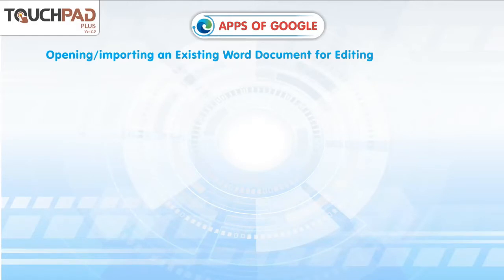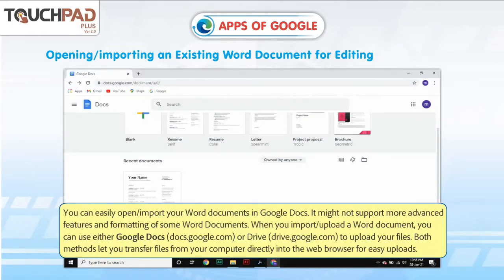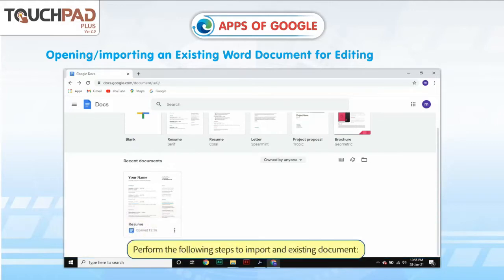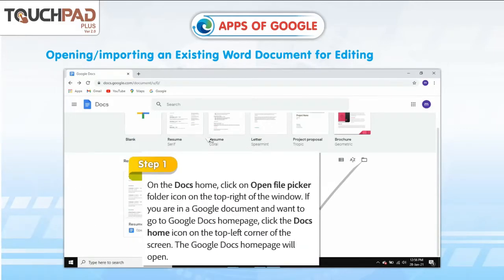Opening or importing an existing Word document for editing. You can easily open or import your Word documents in Google Docs, though it might not support more advanced features and formatting of some Word documents. When you import or upload a Word document, you can use either Google Docs (docs.google.com) or Drive (drive.google.com) to upload your files. Both methods let you transfer files from your computer directly into the web browser for easy uploads. Step 1: On the Docs Home, click on the Open File Picker folder icon on the top right of the window.